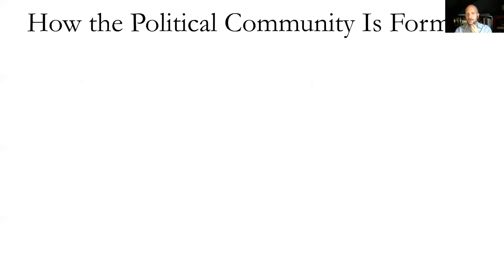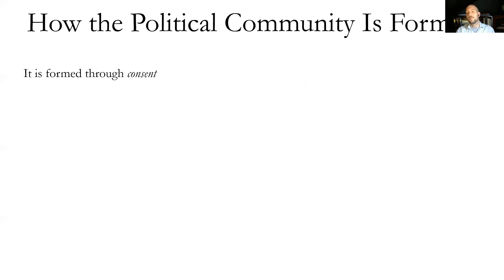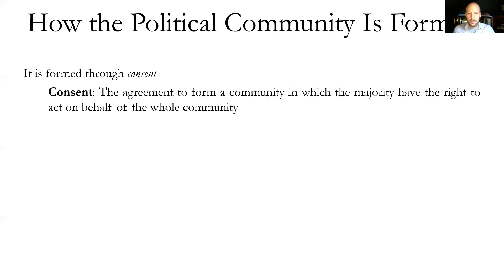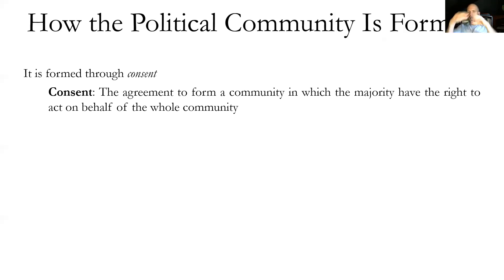Let's first look at how political communities are formed. Locke's answer is straightforward: through what he calls consent. He doesn't use the word covenant — that's what Hobbes would say, a very particular kind of covenant forms the commonwealth. Locke wants to say political community, or political society, is formed through consent — a very particular kind of consent. What he has in mind is an agreement to form a community in which the majority of that community have the right to act on behalf of the whole. So you agree to join this group, and the primary feature is that whatever a majority decides, that's what the whole group will do.